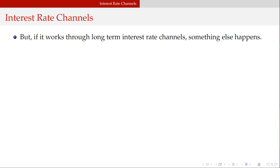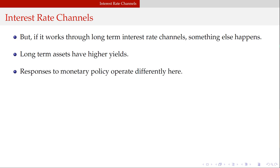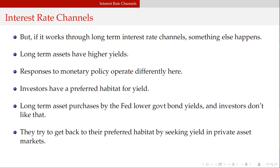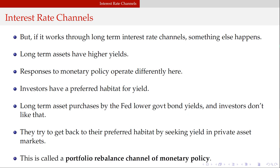If monetary policy works through long-term interest rate channels, something different happens. Long-term assets have higher yields, and responses to monetary policy operate differently through long-term assets. Investors have a preferred yield — a range within their preferences. Anything that drops below that threshold: when government bond yields drop, investors don't like it, so they seek yield in private asset markets. This is known as a portfolio rebalance channel of monetary policy.